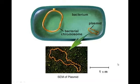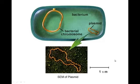Here is an illustration of a bacterial cell — rod-shaped in this case — showing the bacterial chromosome and then the plasmid, which is that little extra piece of DNA that can be replicated. This is an actual scanning electron micrograph, or SEM, of a plasmid. It just looks like a little loop, and that's the DNA.